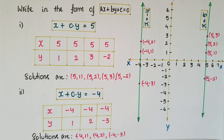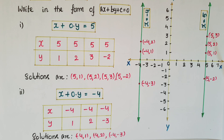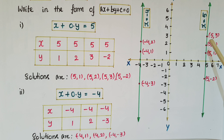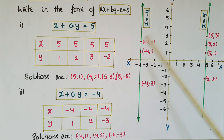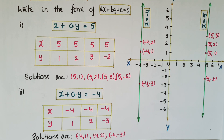So x = any constant is always parallel to the y-axis. If the constant is positive, the line is to the right of the y-axis. If it is negative, the line is to the left of the y-axis.